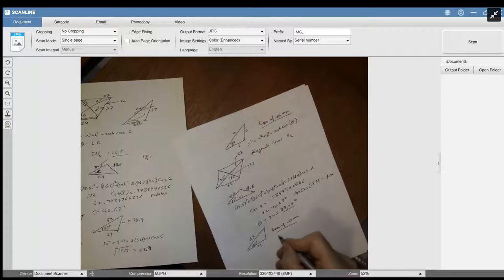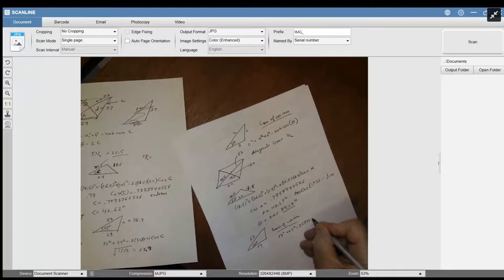And you get 53 squared plus 24 squared minus 2 times 53 times 24 times the cosine of this angle alpha down here.